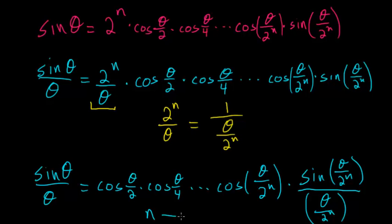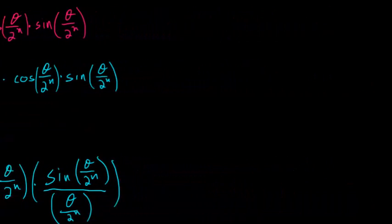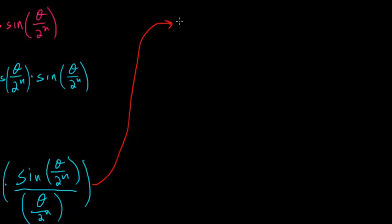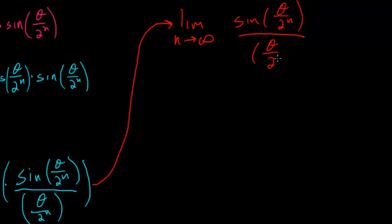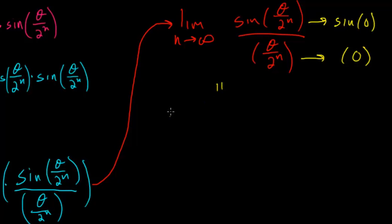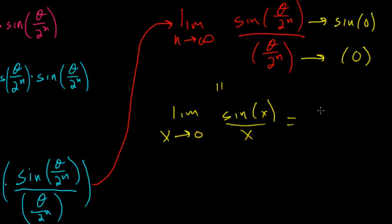Now I can let n approach infinity. When I do this, I only need to examine the final term: the limit as n approaches infinity of the sine of theta over 2 to the n, divided by theta over 2 to the n. As n gets bigger and bigger, the numerator approaches the sine of 0 and the denominator approaches 0. This is equivalent to the limit as x approaches 0 of sine of x divided by x, which is a well-known result from basic calculus equal to 1.